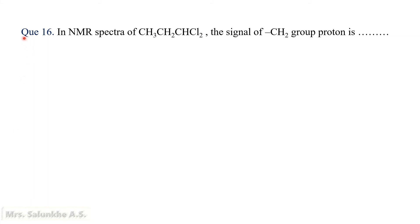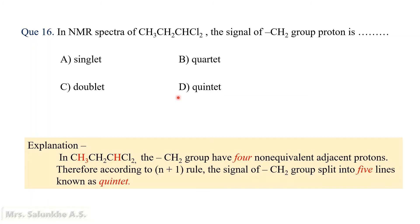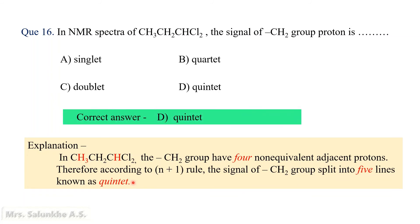Question 16: In the NMR spectra of CH3CH2CH2CH3, the signal of the CH2 group proton is — singlet, doublet, triplet, or quintet? The methylene group proton in CH3CH2CH2CH3 has four non-equivalent adjacent protons (the adjacent methyl and methine group protons). According to the n+1 rule with n=4, the signal splits into 5 lines. A signal split into 5 lines is known as a quintet. Therefore, the answer is quintet.